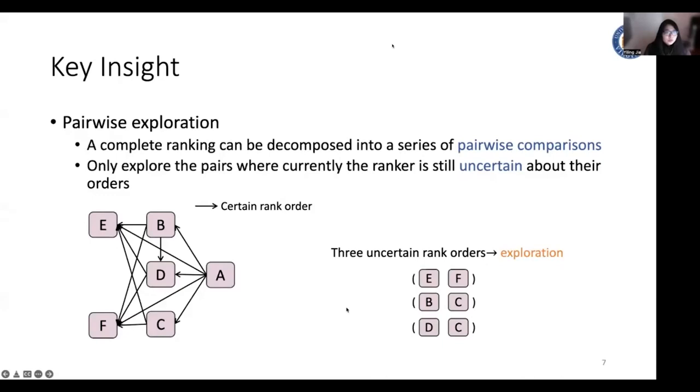In order to do such a pairwise exploration, we have to answer two questions. First, we need to estimate the pairwise preference. And second, we need to quantify the uncertainty of our estimation to determine whether the pairwise preference is certain or uncertain.